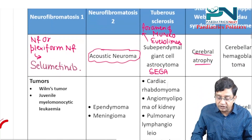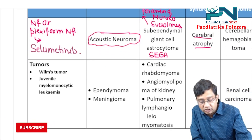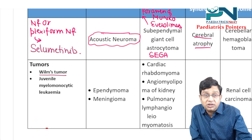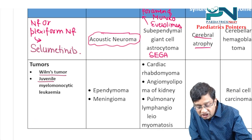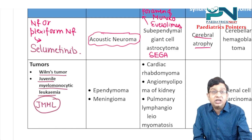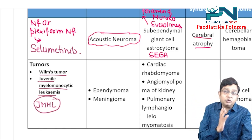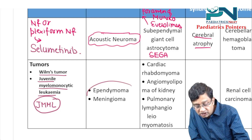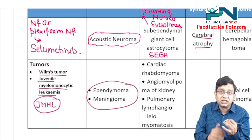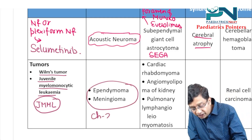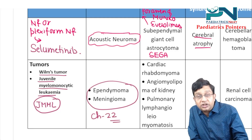Moving to specific tumors: in NF1, you get Wilms tumor, and the leukemia seen is JMML — juvenile myelomonocytic leukemia. In NF2, two specific tumors are ependymoma and meningiomas, both associated with chromosome 22.